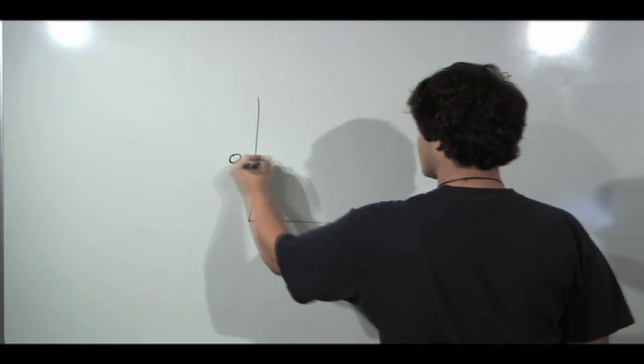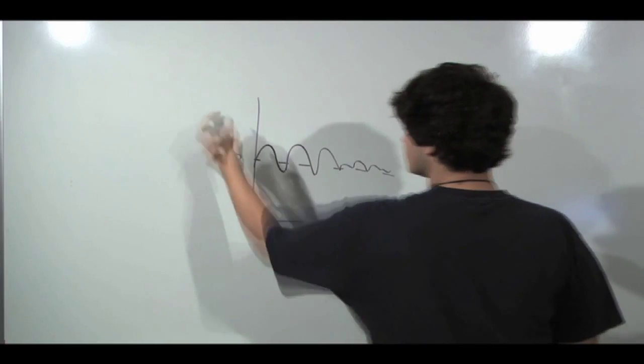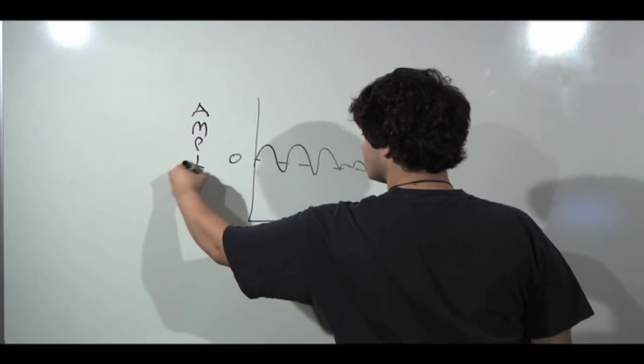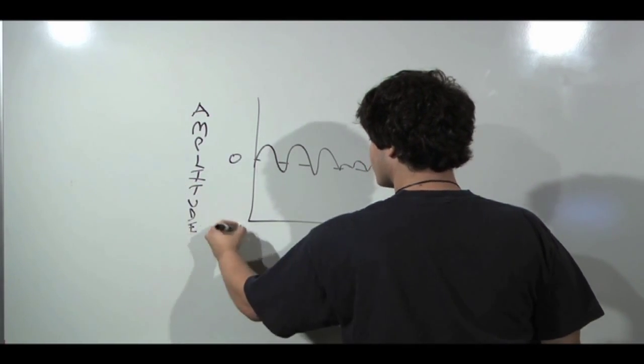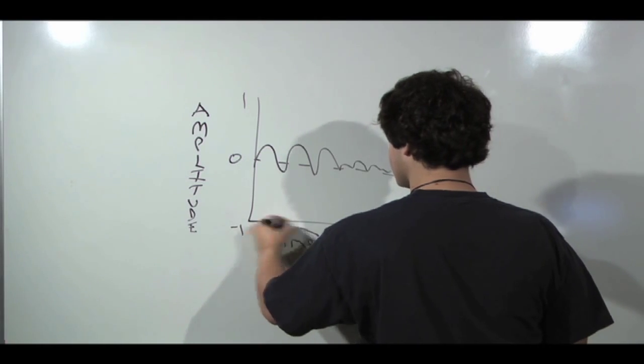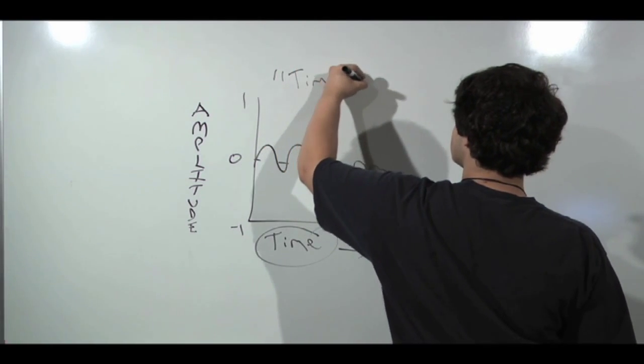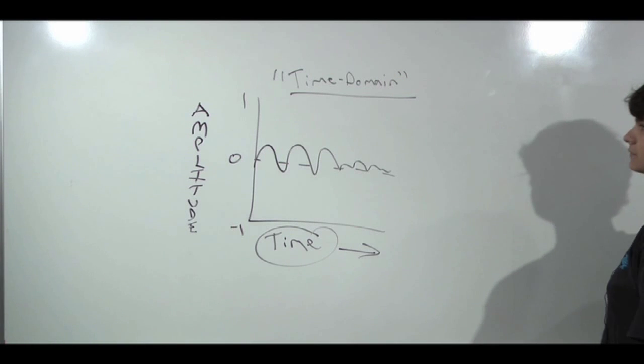When looking at audio data, such as that stored in your Logic session, on a graph, sound is usually represented by amplitude over time. Because time is on the x-axis, we call this a time domain representation of sound. This is what you're looking at every time you see those weird squiggly lines on a track you've just recorded.